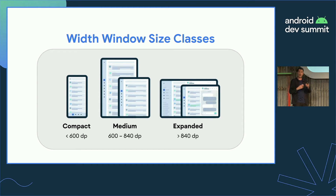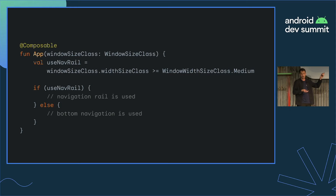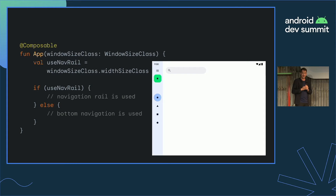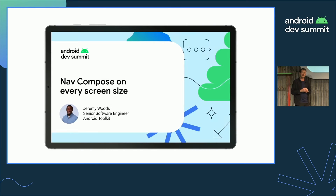For example, a compact window size width can represent the majority of phones, but also if you place the application side by side with another on a tablet, you also get the compact window width size class. Taking this library, we can use it in Compose just like this — we take it as an input to our Composable, then make UI-based decisions. Because we're talking about the application level, the UI we should be most concerned about is navigation. We recommend using bottom navigation for compact window size classes, and NavigationRail for the rest — meaning the medium and expanded window width classes. There's a talk called Navigation Compose on Every Screen by Jeremy that goes more into the details of handling navigation in your application given large screens.